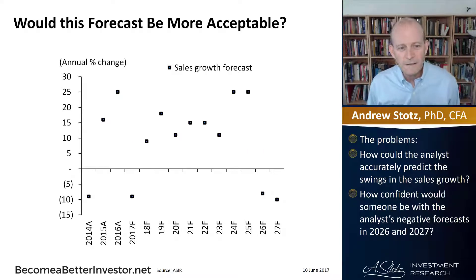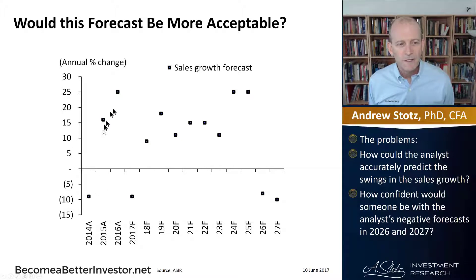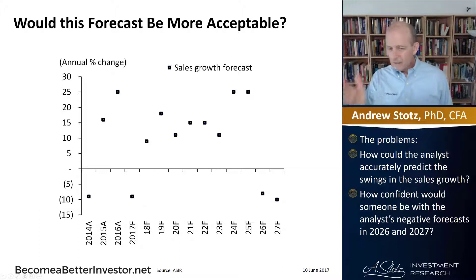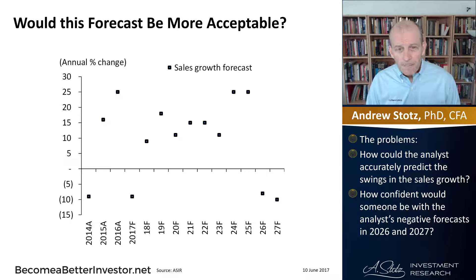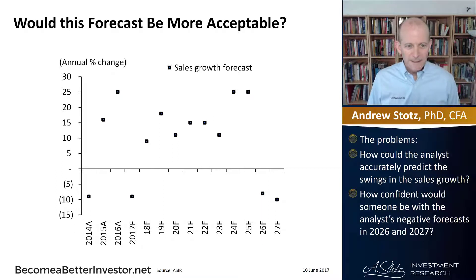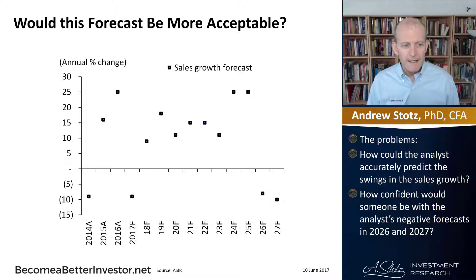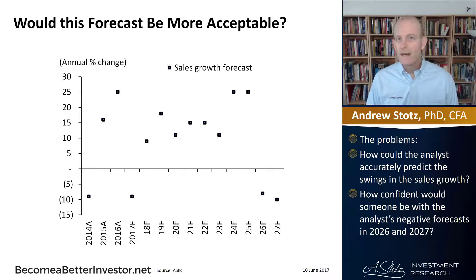Now let's move over and show a few periods of actual historical data — 2014, 2015, 2016 — but I'm forecasting from 2017 to 2027, a 10-year forecast. We don't see a line anymore; we see a lot of discrete points. We know that companies' revenue can be very volatile, and this company is very volatile. So how could the analyst accurately predict these swings in sales growth? How could they possibly predict that next year in 2017 it's going to be negative 10%, the next year positive 10%, the next year positive 18%? How do they know that?